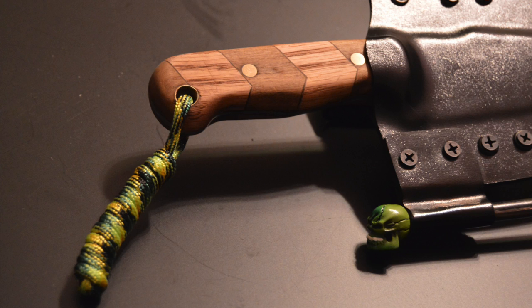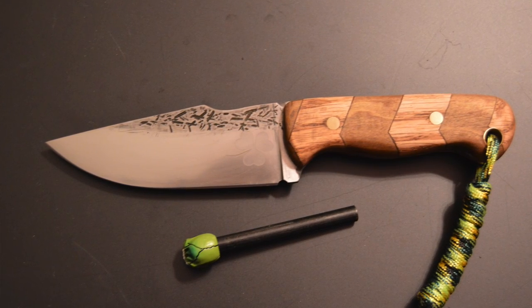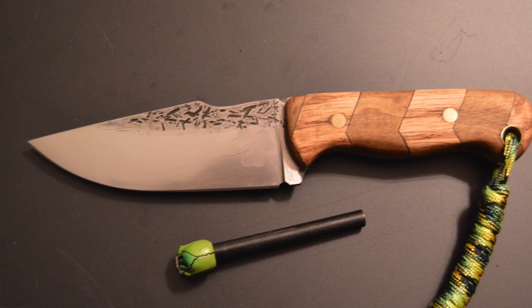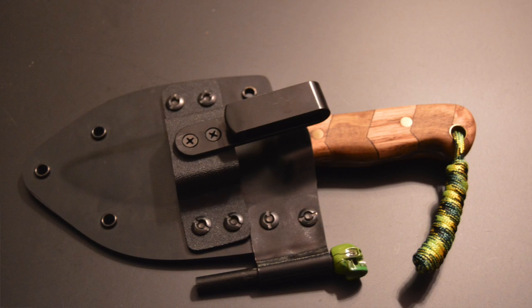The Kydex sheath is absolutely fantastic. A nice loop there for a ferro rod. That's a great thing to do when you're making a knife because now you've got a fire kit basically on your belt and it takes very little extra room as opposed to just a knife and sheath. Good job Dimitro, really appreciate it and thank you for sending that in.